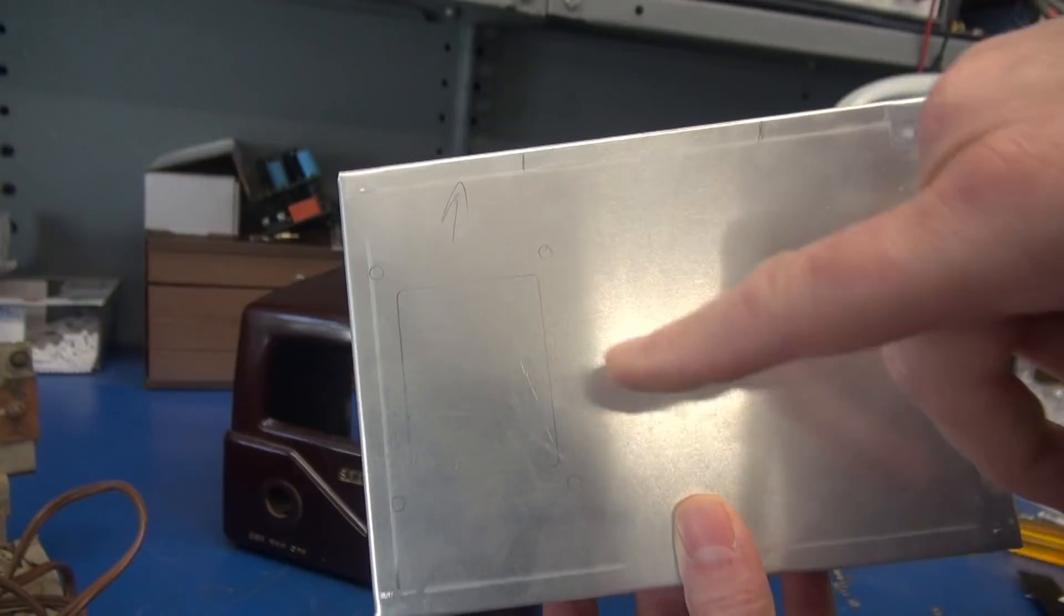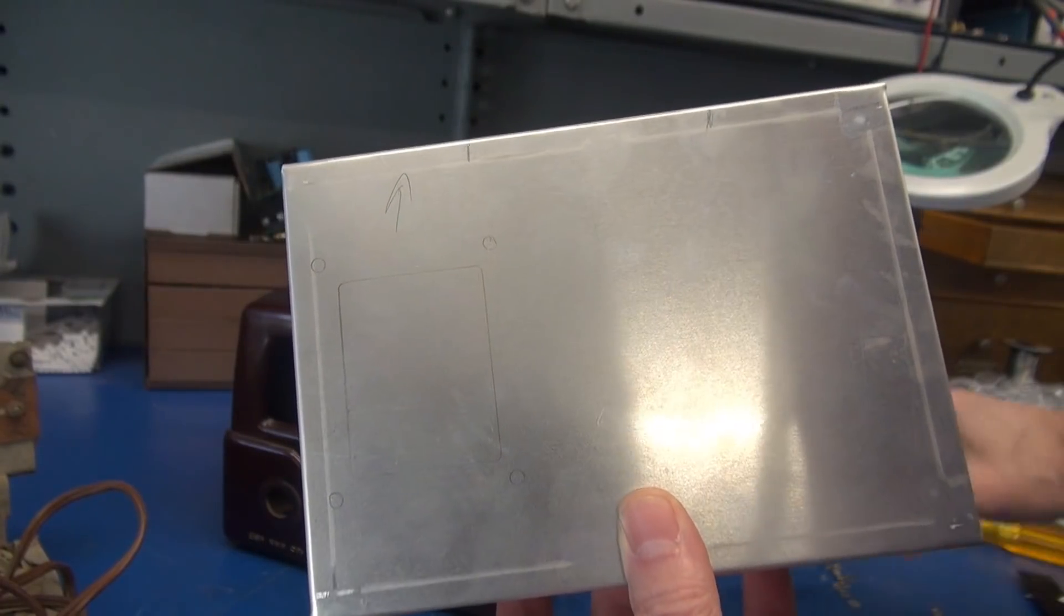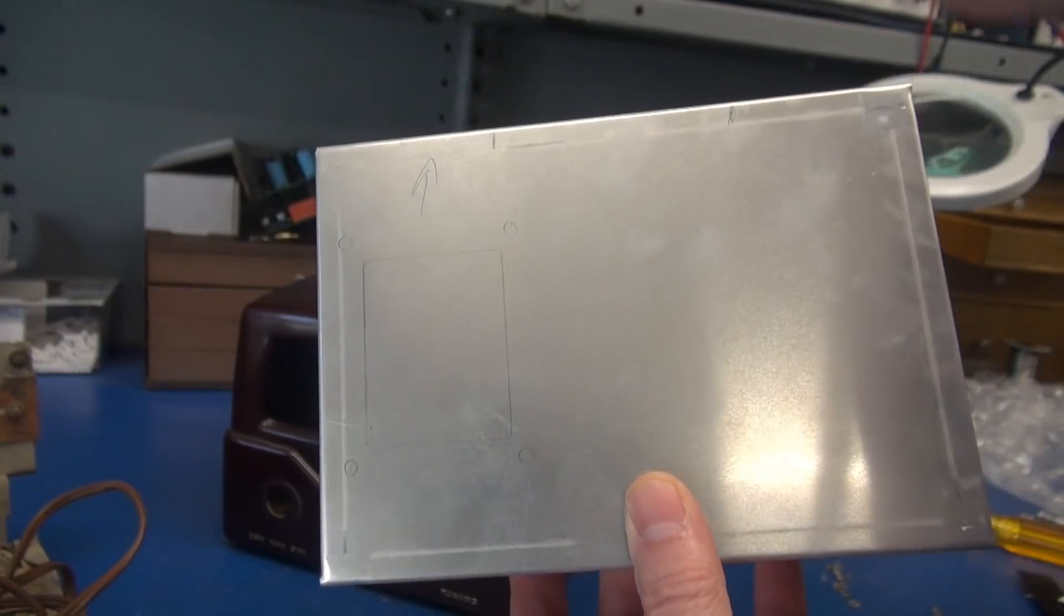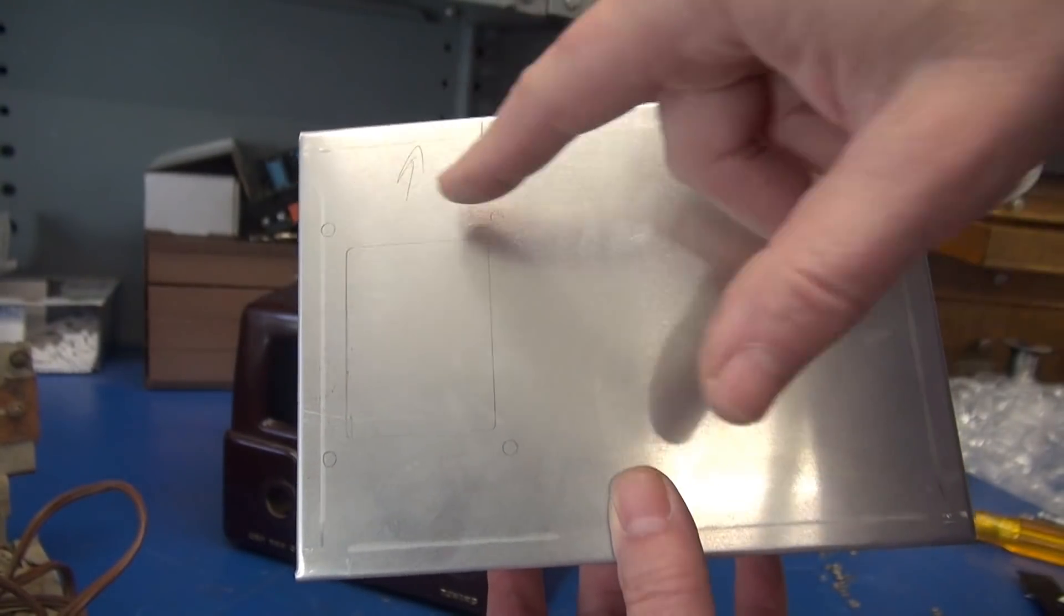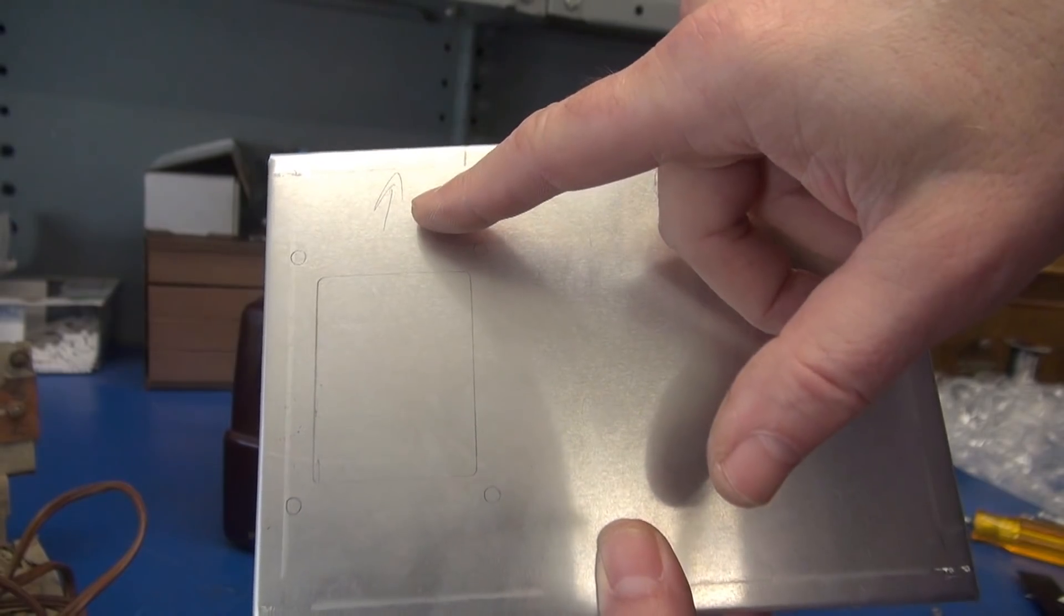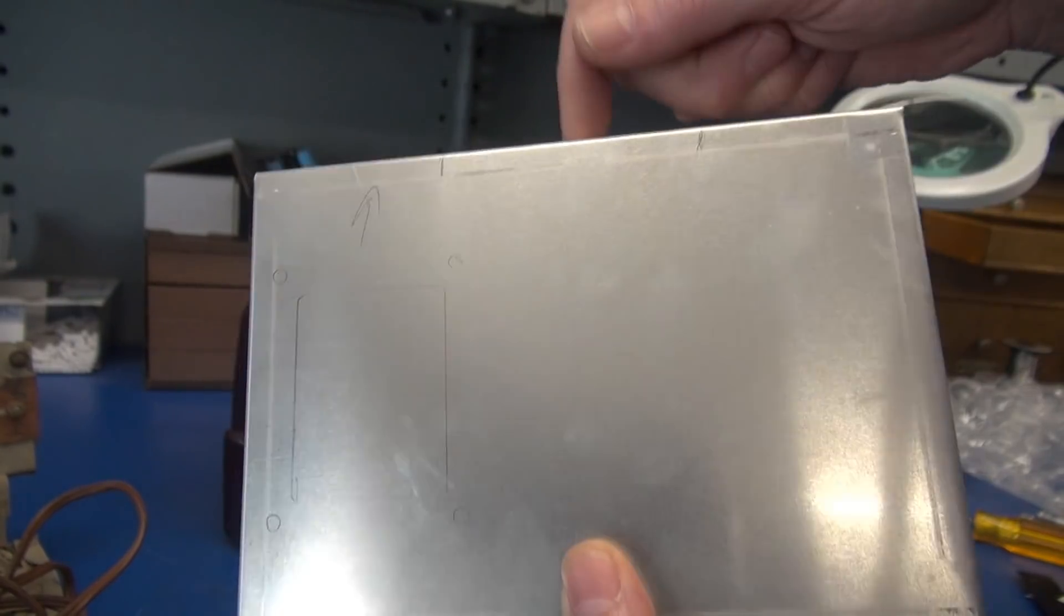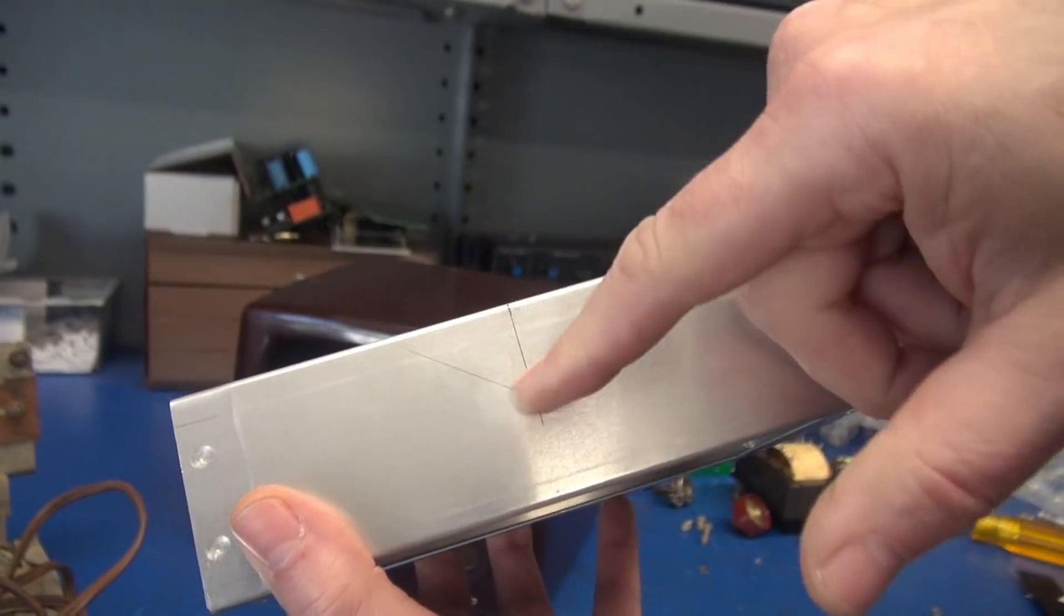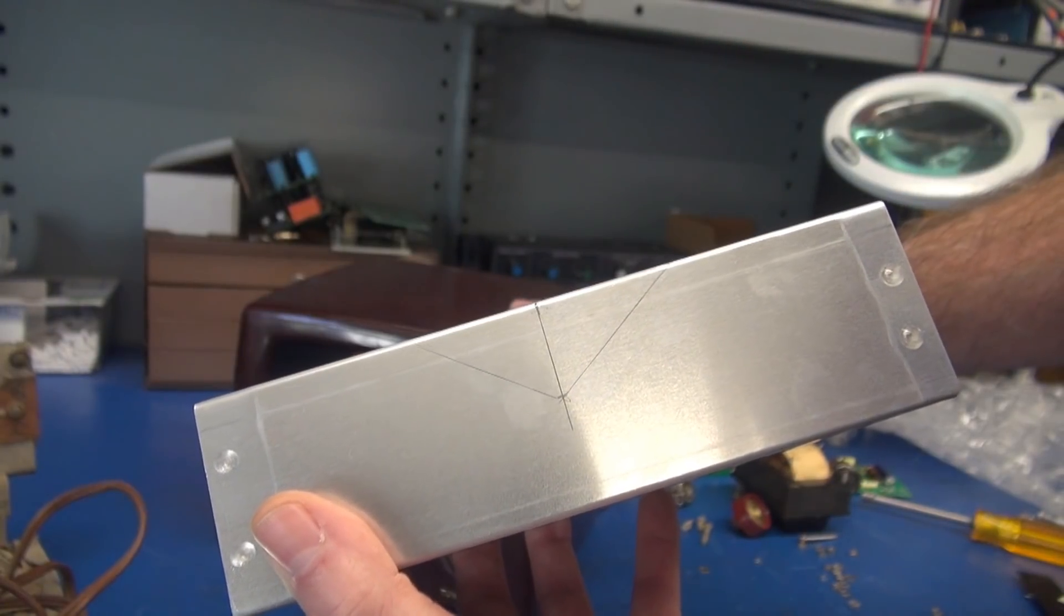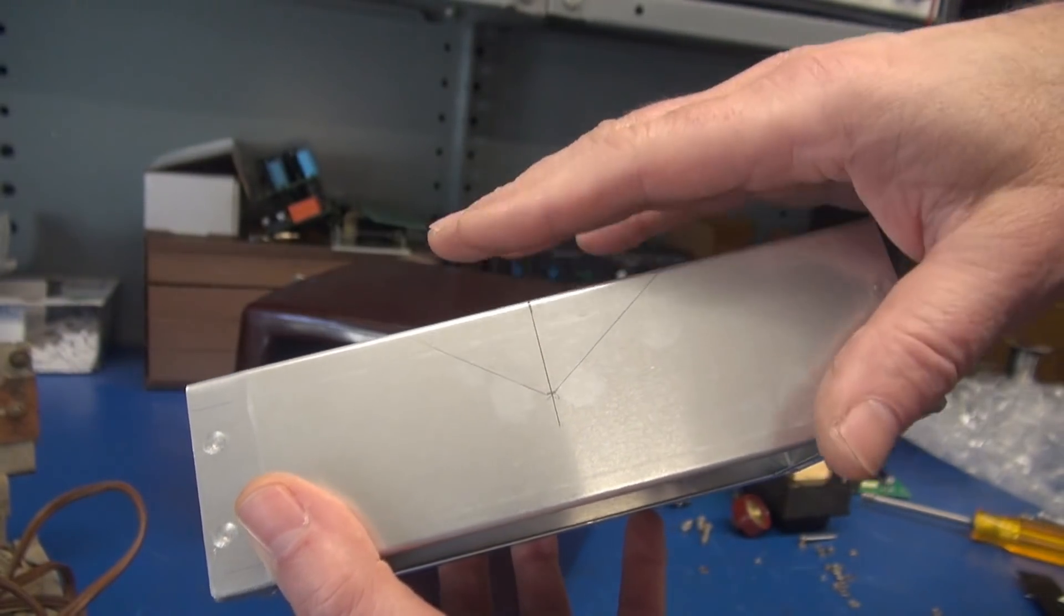There's the cutout for the power transformer using this frame as a template. So this rectangle will come out. We got our four holes to mount the transformer. See our arrow pointing forward here.